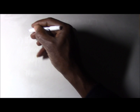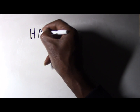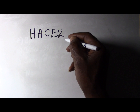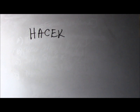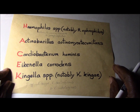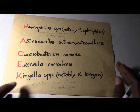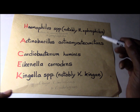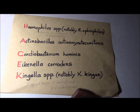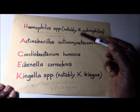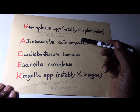This is what this subject is about — your ability to recognize what this acronym stands for. HACEK: the H stands for Haemophilus species, notably H. aphrophilus. Other species in the group include H. parainfluenzae and H. paraphrophilus.